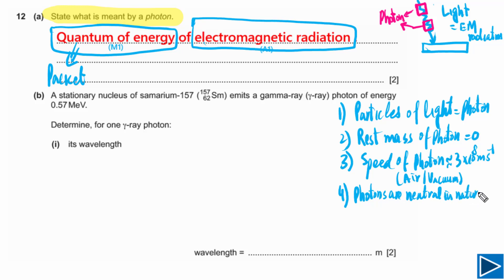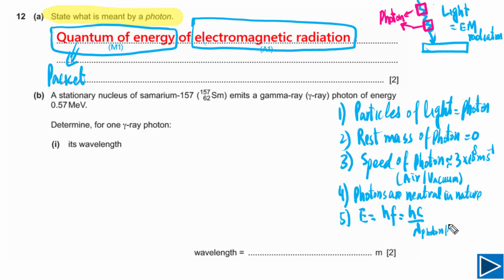Next, how we can calculate the energy of a photon. Energy of photon E = hf, or equivalently E = hc/λ, where λ is the wavelength of the photon or of the light. For momentum of a photon: p = h/λ, where λ is the wavelength of the photon.